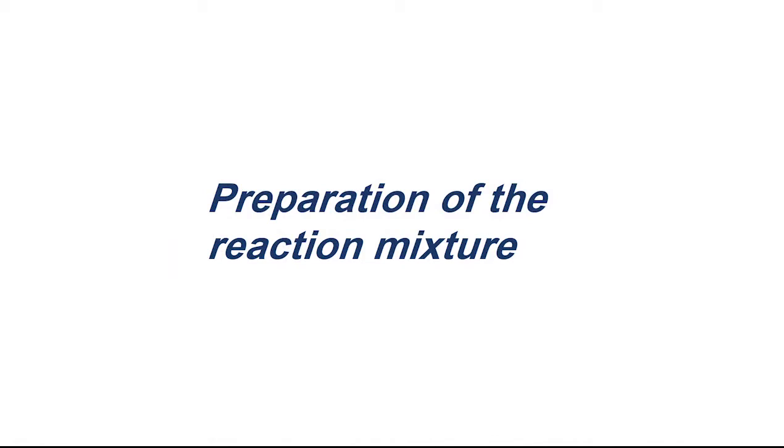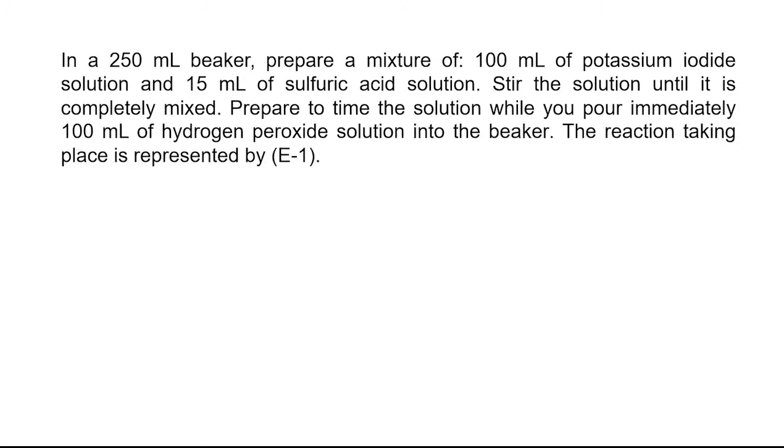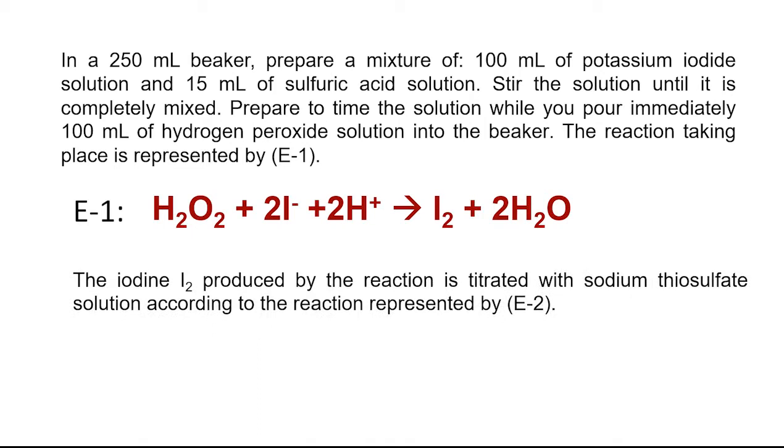Preparation of the reaction mixture. In a 250 milliliter beaker, prepare a mixture of 100 milliliters of potassium iodide solution and 15 milliliters of sulfuric acid solution. Stir the solution until it is completely mixed. Prepare to time the solution while you pour immediately 100 milliliters of hydrogen peroxide solution into the beaker. The reaction taking place is represented by E1: H2O2 plus 2I minus plus 2H plus give I2 plus 2H2O. The iodine I2 produced by the reaction is titrated with sodium thiosulfate solution according to the reaction represented by E2: I2 plus 2S2O3 2 minus give S4O6 2 minus plus 2I minus.